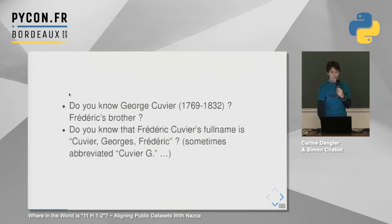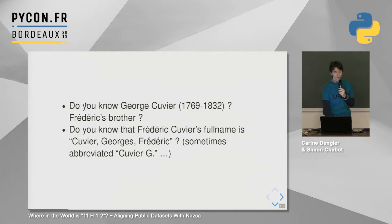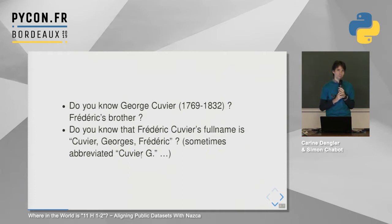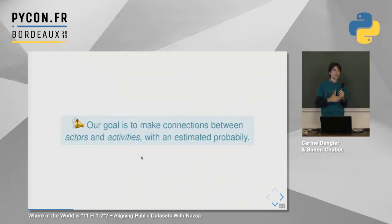We have to deal with homonyms. For instance, Cuvier had a brother called Georges, and both were active at almost the same time. So when we have only the last name Cuvier and the date, we don't know which Cuvier we are talking about. It's even harder because Frédéric's full name is Cuvier Georges Frédéric — sometimes they wrote Cuvier Georges but were referring to Cuvier Frédéric. Our goal is to make connections between actors and activities, and to enrich the museum's data.